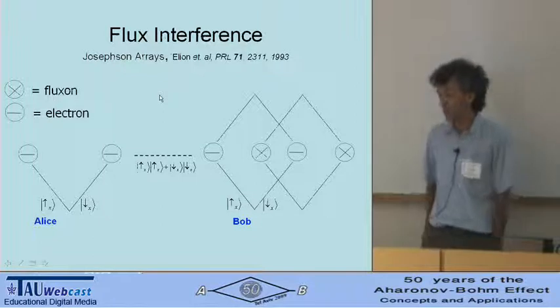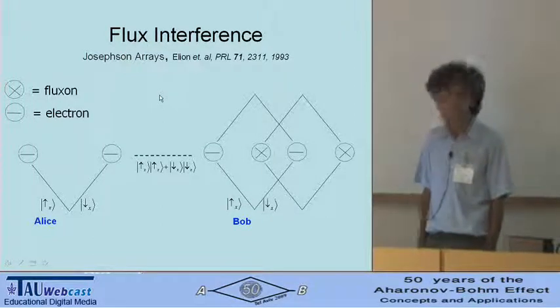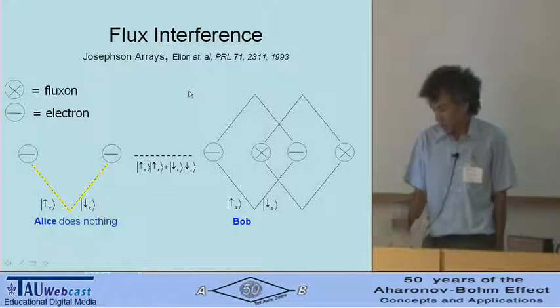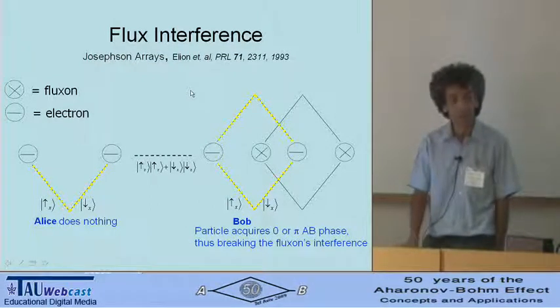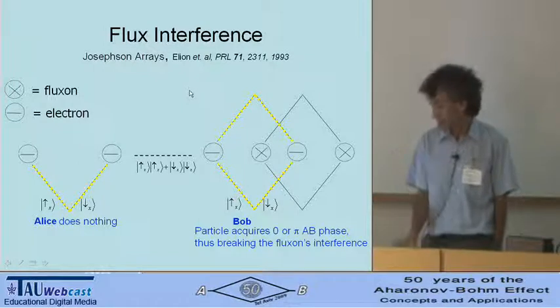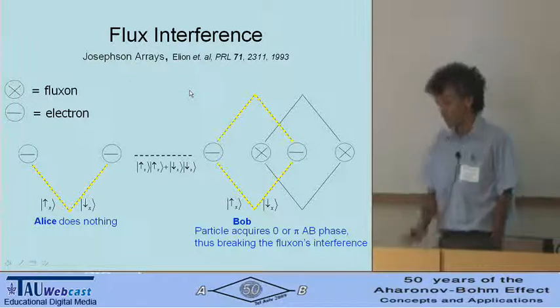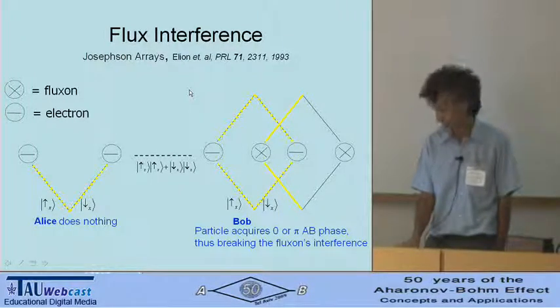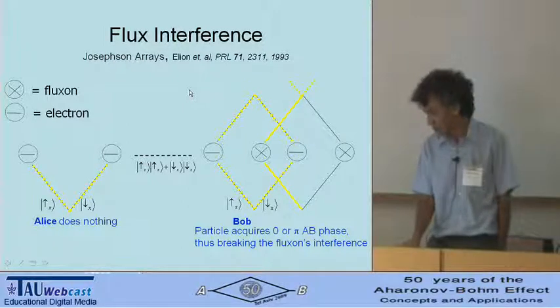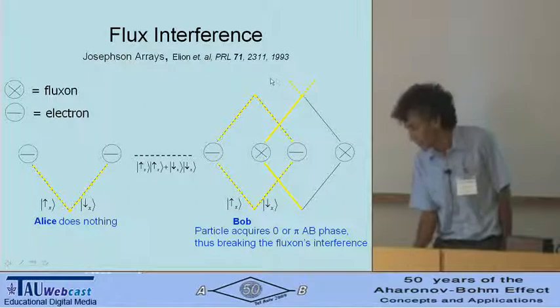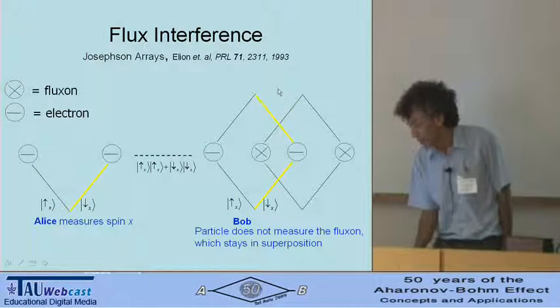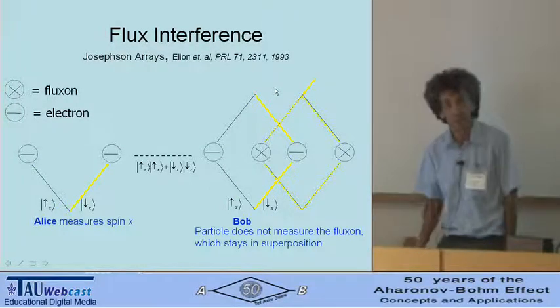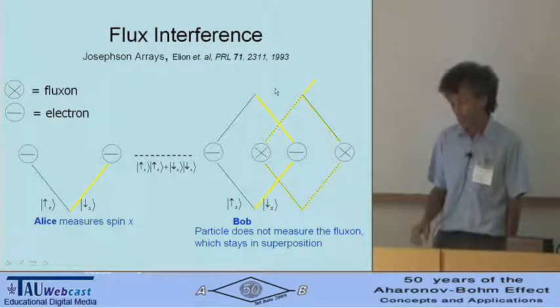So we have again Alice and Bob. And now we have a flux on an electron being treated both quantum mechanically. And here again, Alice may choose, may refrain from doing any measurement. And then Bob's particle is superposed. This way now the fluxon cannot be superposed because if by Bob's very sensing or not sensing, gathering or not gathering the AB phase, then the fluxon must be inside his interferometer or outside of it. And as a result, interference is lost. And the same for this case. Alice may, however, again make a measurement in which case this particle is now not going around the fluxon or here. And then interference remains intact. So here the question is now whether causality may not be compromised.